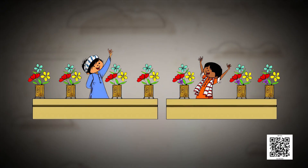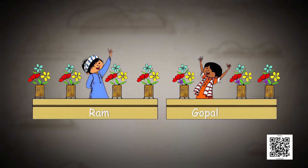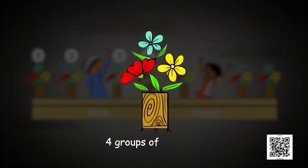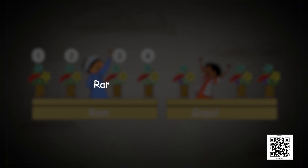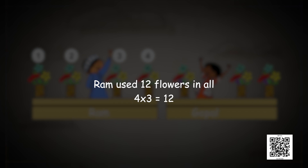Let's get started. I have two friends — Ram and Gopal. As you can see in the picture, Ram has some bouquets. There are four bouquets with Ram — four groups of three flowers. If you count, in every bouquet there are three flowers. So we can say four into three. Ram used twelve flowers in all, found easily by multiplying four with three.